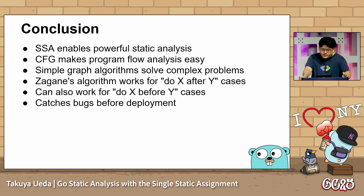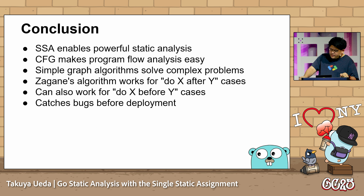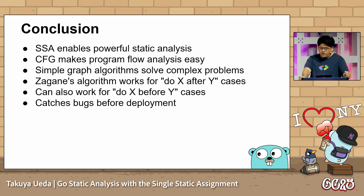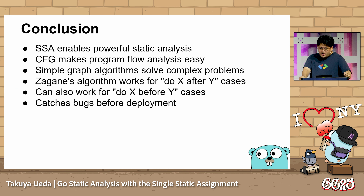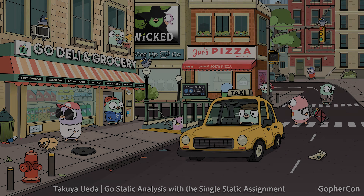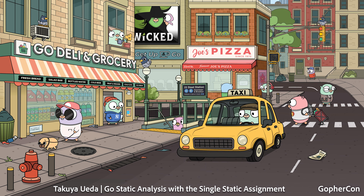Conclusion: SSA gives us powerful tools for static analysis. The control flow graph helps analyze program flow. The Jaguarne algorithm works for both 'do X after Y' and 'do X before Y' cases. This helps catch bugs before production. Thank you for listening.